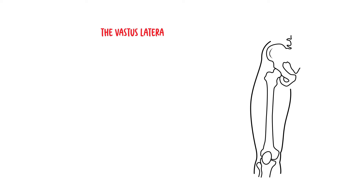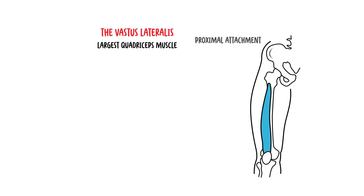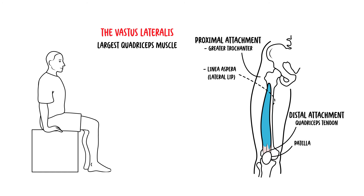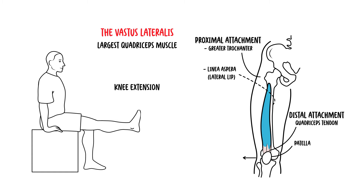The vastus lateralis has the largest volume of all the quadriceps. It originates at the greater trochanter and the lateral lip of the linea aspera of the femur, and attaches to form the quadriceps tendon. It also has some aponeuroses that actually attach to the patella itself. The vastus lateralis contributes to knee extension, but also pulls the patella laterally.